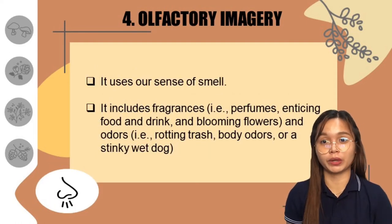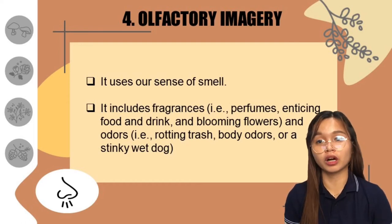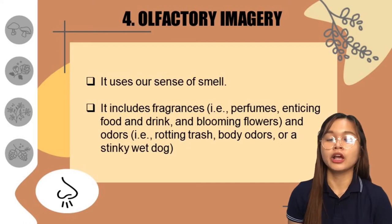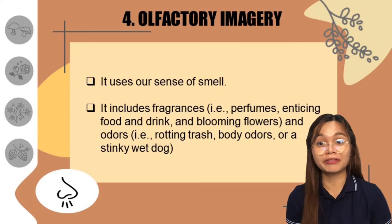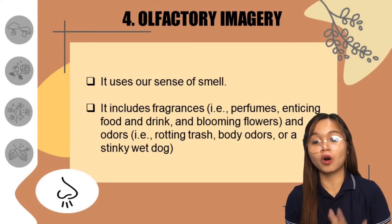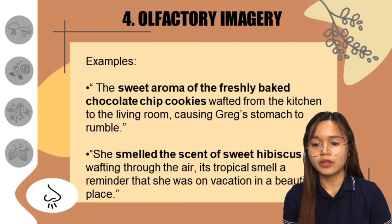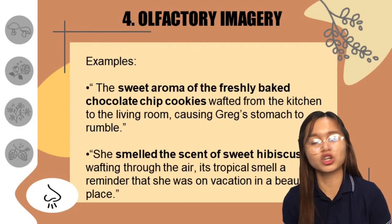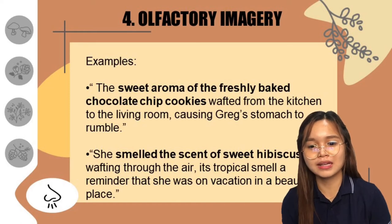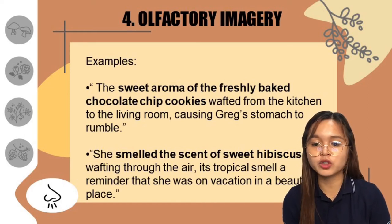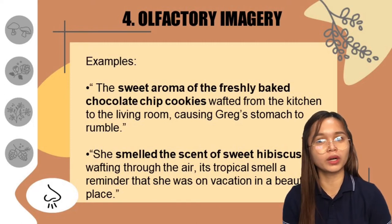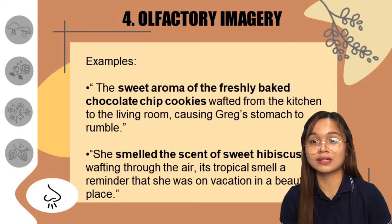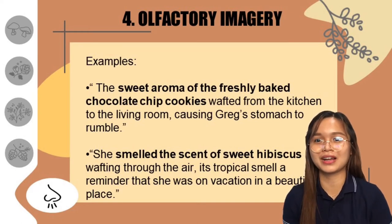Next, we have olfactory imagery. It makes use of our sense of smell for us to understand what we read or listen to. It includes fragrances such as perfumes, food, blooming flowers, and the like — and also odors. For example, the phrases sweet aroma of the freshly baked chocolate chip cookies and the sweet scent of hibiscus are sensory words we can imagine using our sense of smell. That's olfactory imagery.